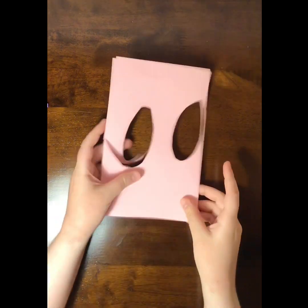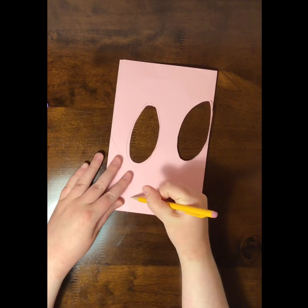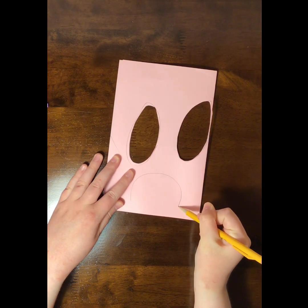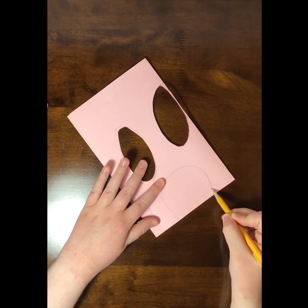So the first thing that you can do is take a piece of pink paper, and you're going to want to make the body of the jellyfish first. I'm going to take my pencil and just draw the body of the jellyfish. It kind of looks like a bell, like a bell-shaped jellyfish.